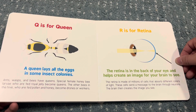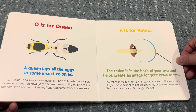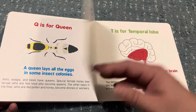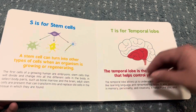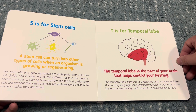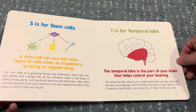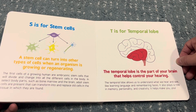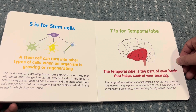R is for retina. The retina is in the back of your eye and helps create an image for your brain to see. S is for stem cells. A stem cell can turn into other types of cells when an organism is growing or regenerating. T is for temporal lobe. The temporal lobe is the part of your brain that helps control your hearing.